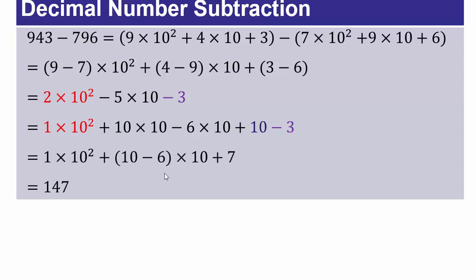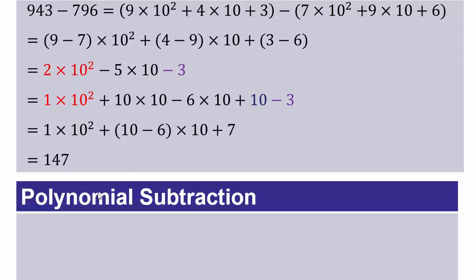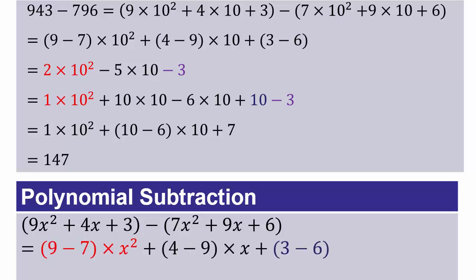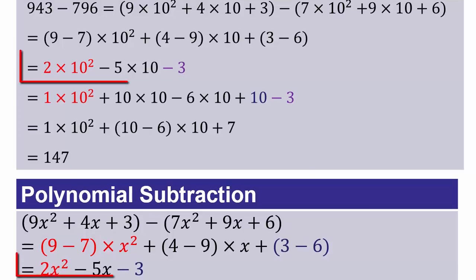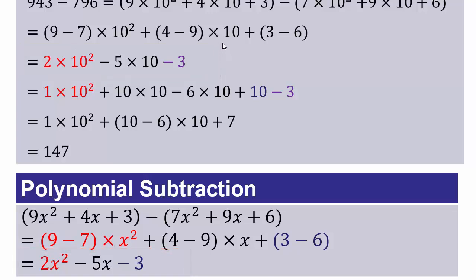For the corresponding polynomial subtraction: 9 minus 7x², 4 minus 9x, and 3 minus 6 singletons gives 2x² − 5x − 3. In the decimal number system we had to borrow to write the answer as a number, combining everything together. In polynomials, however, we can write combinations of x² and x terms with addition or subtraction freely — so that is our final answer.